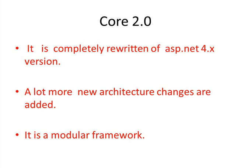So what is .NET Core 2.0? Core is a completely rewritten version of ASP.NET 4.x. It's a new version containing a lot of architectural changes and is a modular framework. It is a cross-platform, high-performance, open-source framework used for building modern applications.